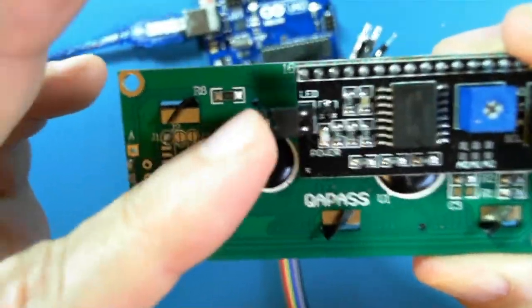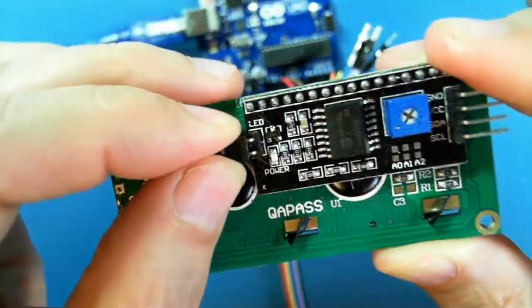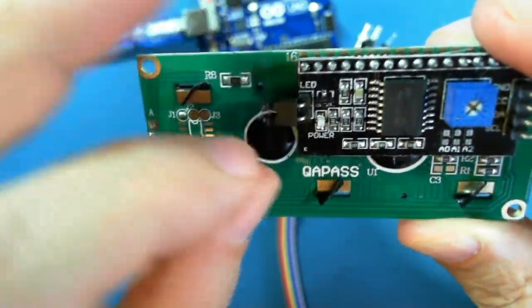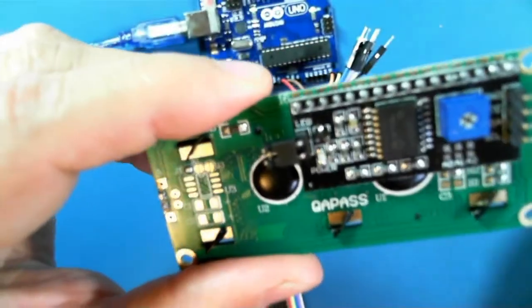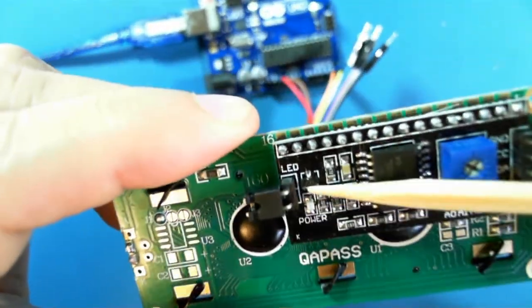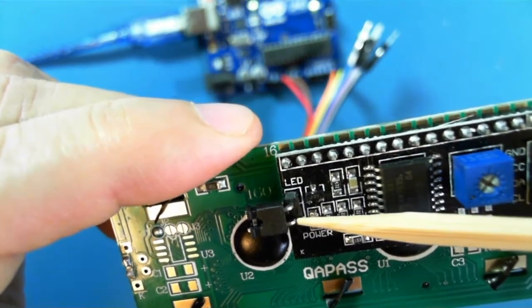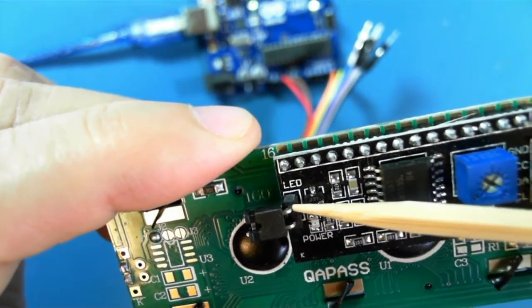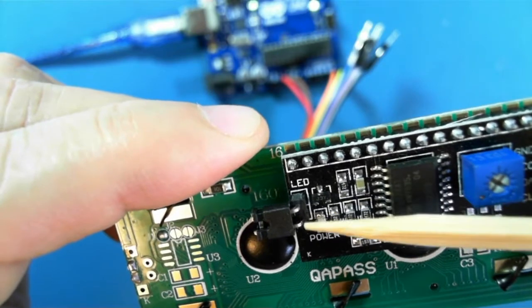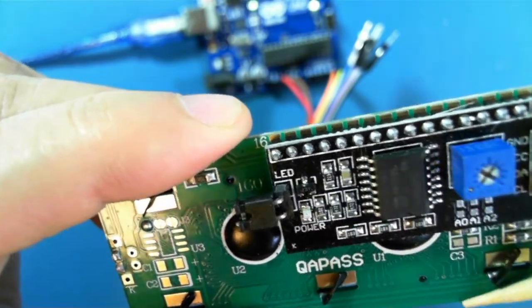This connector here just turns on or off the backlight. Right now there's a jumper between these two connections and so it's turning on the LED backlight.